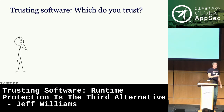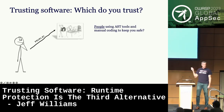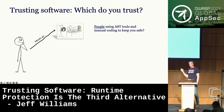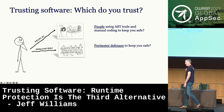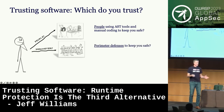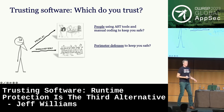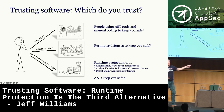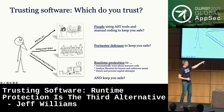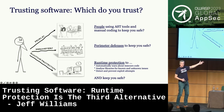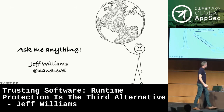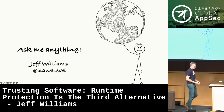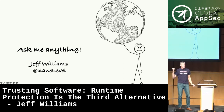So — who wants to trust everything they care about to getting developers to do the right thing? Who wants to trust everything important to perimeter protection? And who would now consider using runtime protection to automatically warn about insecure code, analyze libraries, and detect and prevent exploits? About half the room — that's awesome.